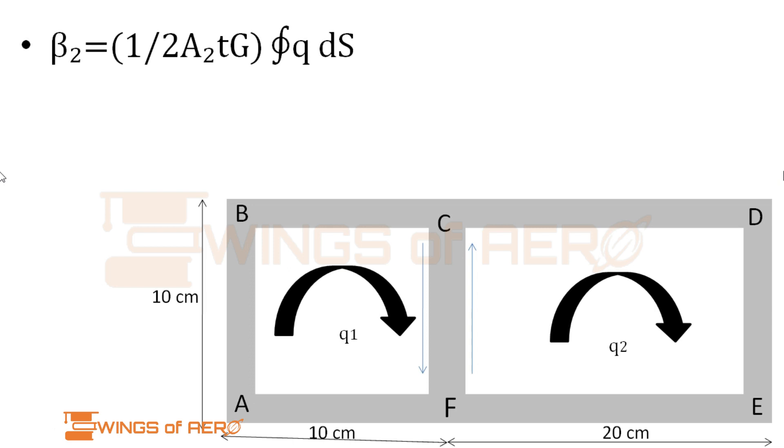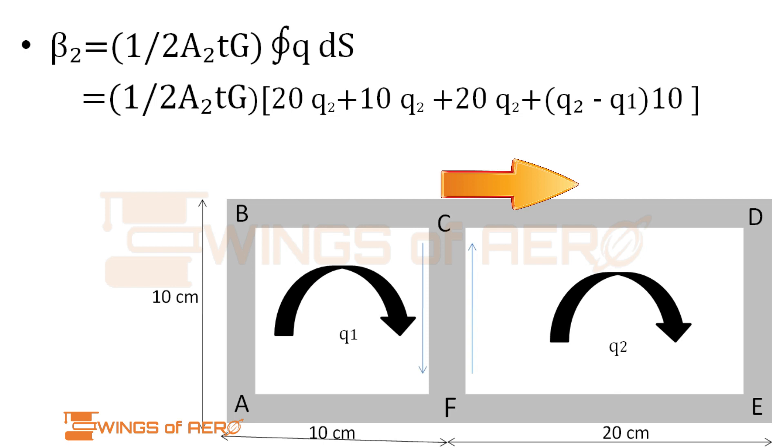Similarly, we're going to find beta 2 using the general formula. Let's start from point C. CD: q2, length is 20, so q2 into 20. DE is q2 and ds for DE is 10. EF distance is 20, so q2 into 20.